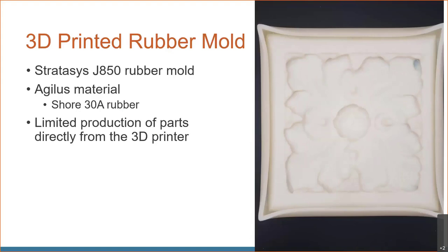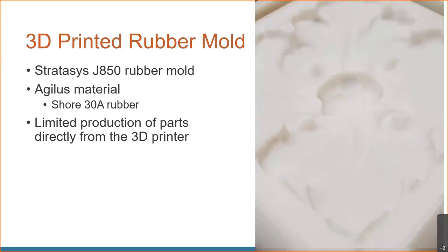The rubber mold is the inverse of the actual part — brought in and inverted using CAD software. With PolyJet 3D printers, we can print using the Agilus material, which is a Shore 30 rubber — pretty soft and flexible. We can cast plaster right into it and then peel it out. This is great for lower production runs — say 20 to 50 parts. We also hollowed out the back to make it cheaper to print, faster, and more flexible for easier demolding. We have the full digital archive, so if we need to print the mold again, we just reprint it — no need to keep it in storage.